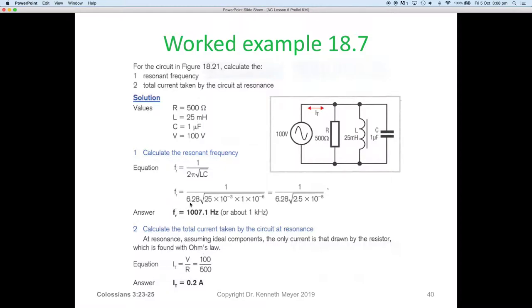So what's the resonant frequency? Our equation is FR equals 1 over 2π√LC. So we get 1 over 6.28 multiplied by 25×10^-3 for millihenries, times 1×10^-6 for microfarads. We do the math and our resonant frequency is 1007.1 hertz. Well, we would call that about 1000 hertz or 1 kilohertz. And then to calculate the total current, I total is simply the voltage divided by the resistance. So we're going to have 100 volts divided by 500 ohms. We're going to have 0.2 of an amp, which will be the only current flowing in the circuit.